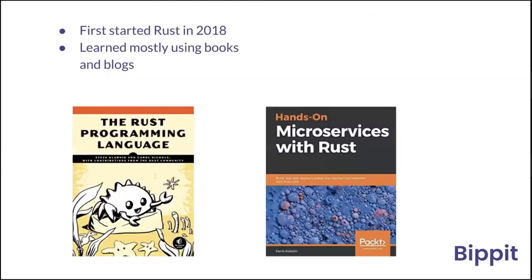Those two are my main resources when I first started getting into Rust. Once you Google Rust programming language, the book on the left is probably the first one that comes up, and I think most people have gone through that one. It has a lot of information on different parts of the language and got me to a competent enough level. But my focus was to build a microservice, so I followed on with the second book, 'Microservices with Rust', which was more specific to my use case.